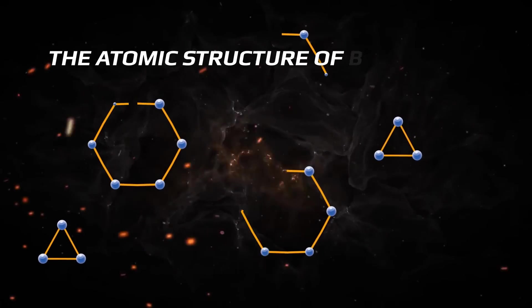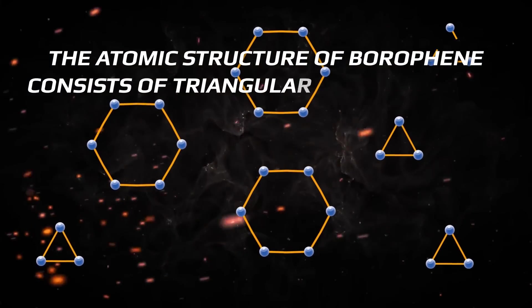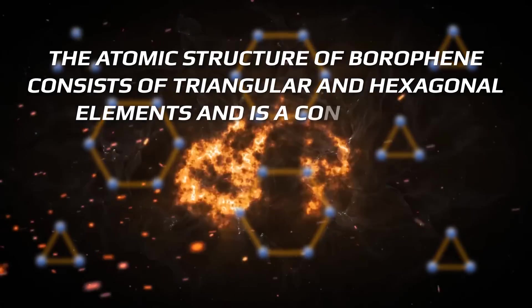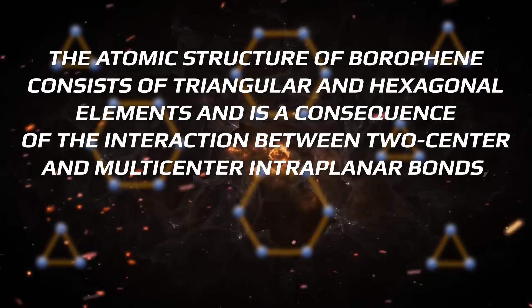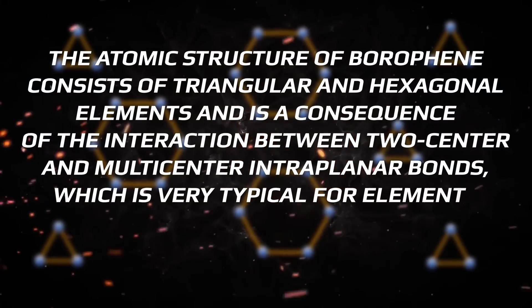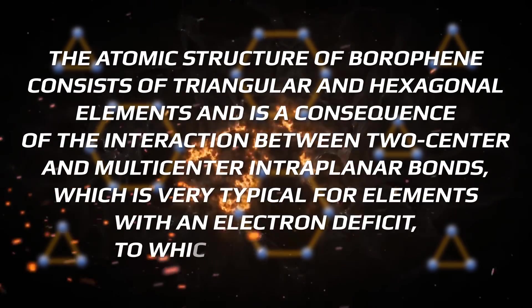The atomic structure of borophene consists of triangular and hexagonal elements and is a consequence of the interaction between two-center and multi-center intraplanar bonds, which is very typical for elements with an electron deficit to which boron belongs.